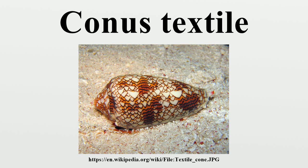Feeding Habits: C. textile is a carnivorous species, and uses a radula to inject a conotoxin to kill its prey. C. textile eats snails. The proboscis, the tip of which holds the harpoon-like radula tooth, is capable of being extended to any part of its own shell. The living animal is a risk to any person handling it who has not taken proper care to protect exposed skin. Several human deaths have been attributed to this species.